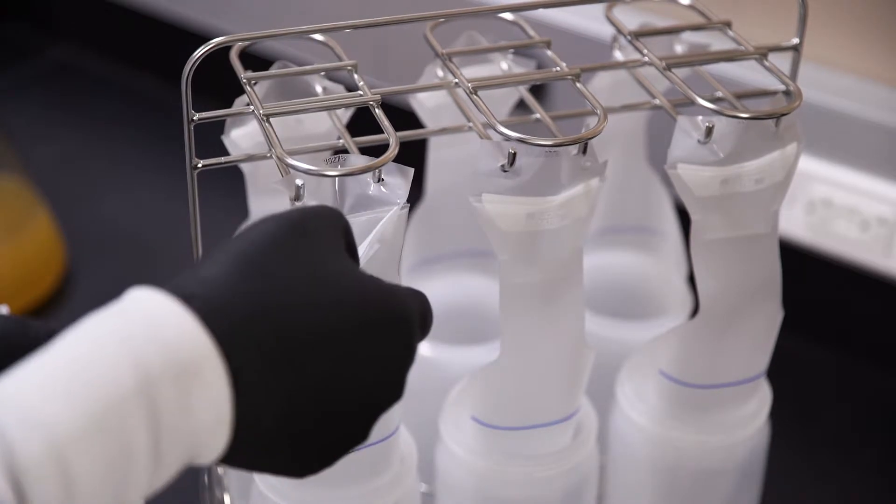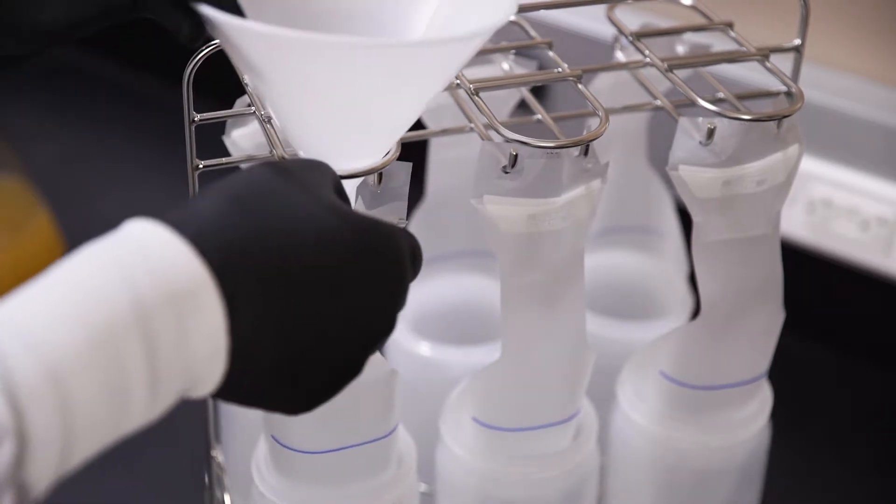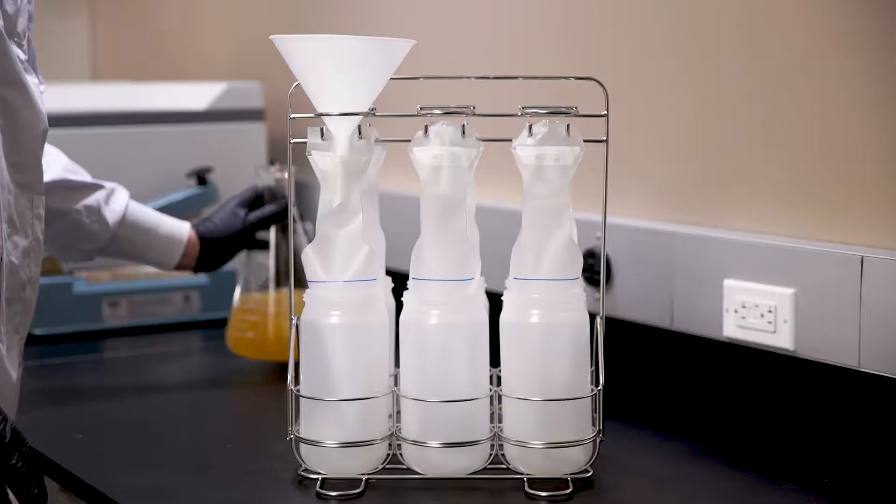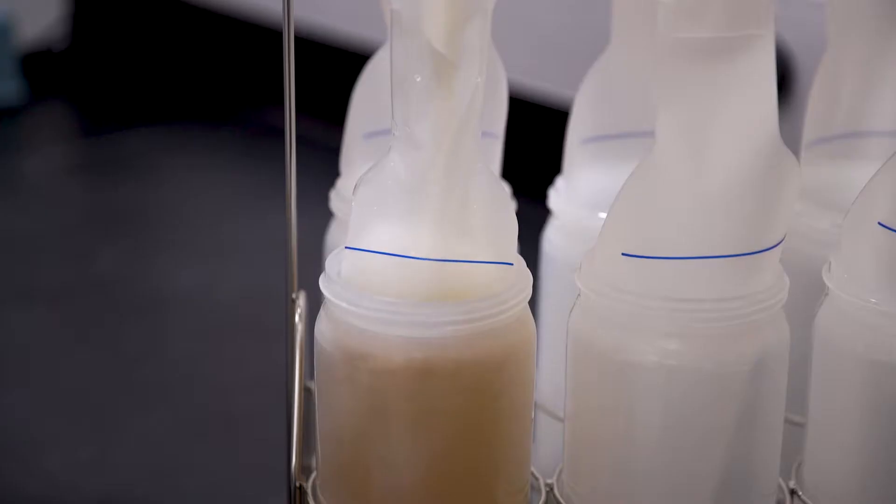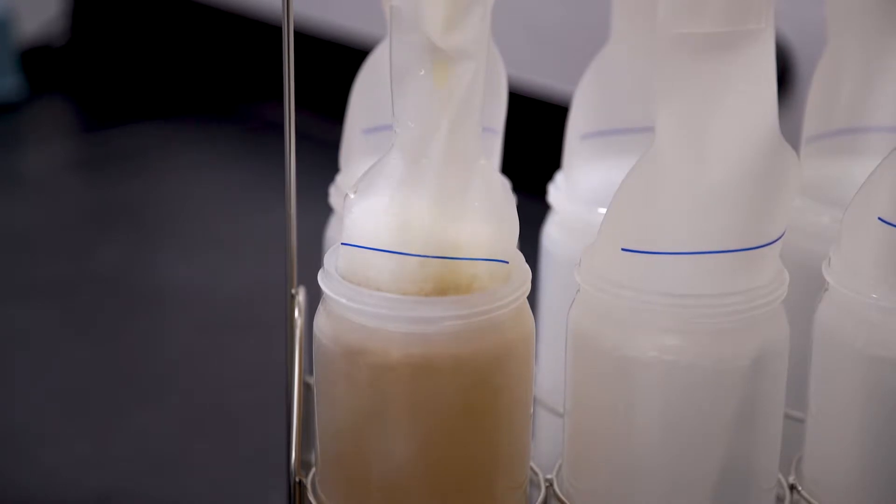Open the valve by pulling on the liner tab and insert the funnel until it rests on the rack. With the end of the funnel past the valve, pour your sample into the funnel until the liquid reaches the blue maximum fill line on the liner.